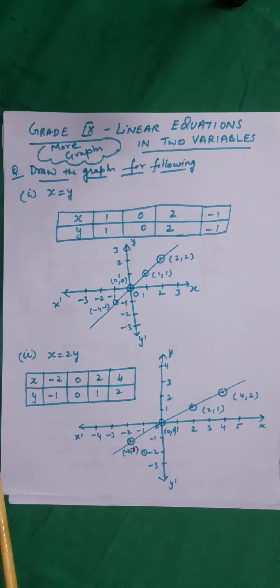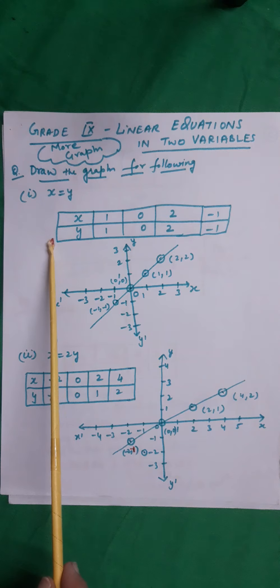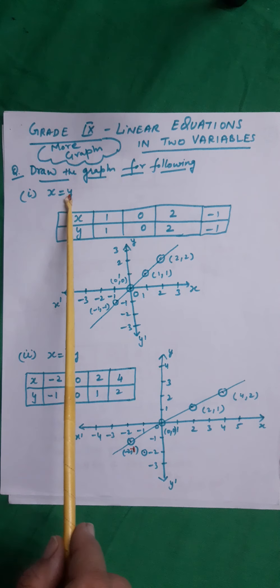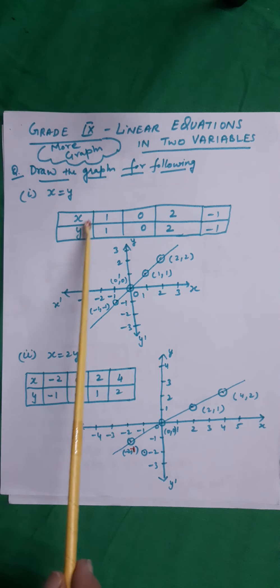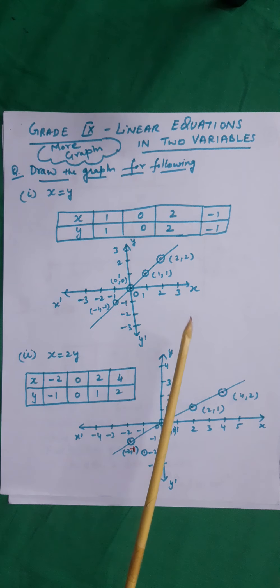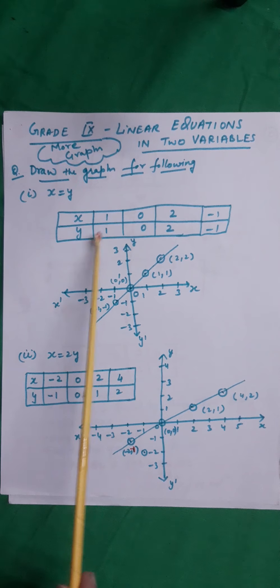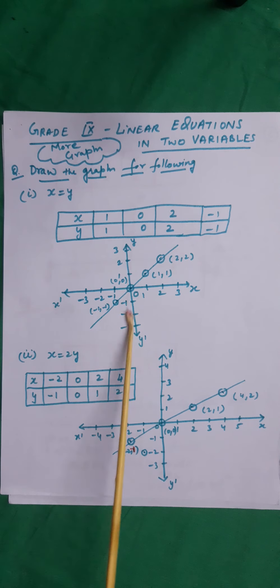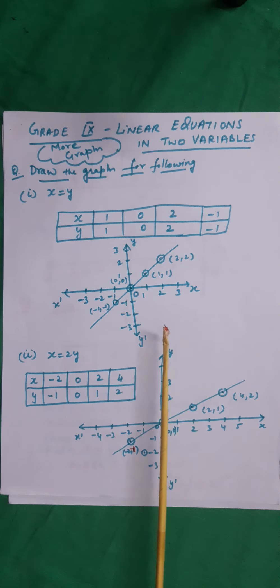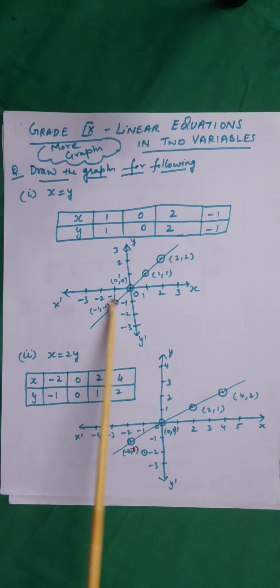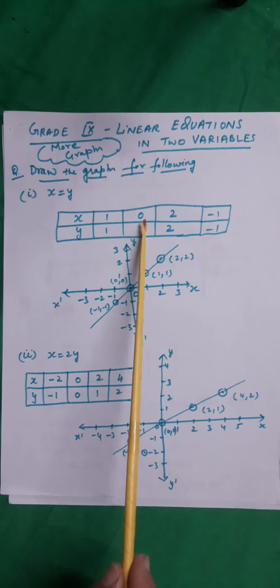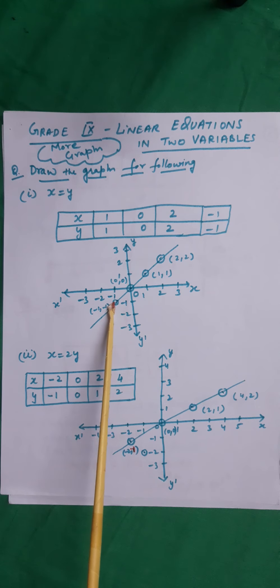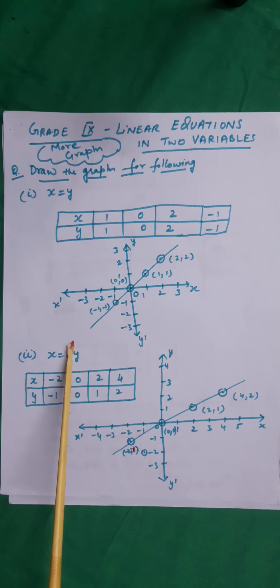Draw the graph of x equals y. Make a table with at least three points. Since x equals y, whatever value x takes, y takes the same value: (1,1), (0,0), (2,2), and (minus 1, minus 1). Plot all these points and you will notice they all lie on a straight line.